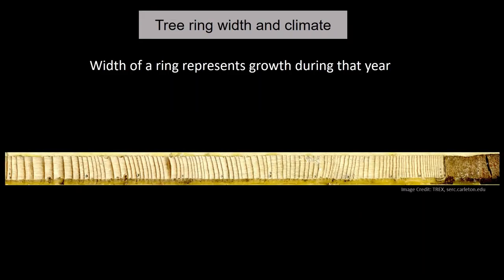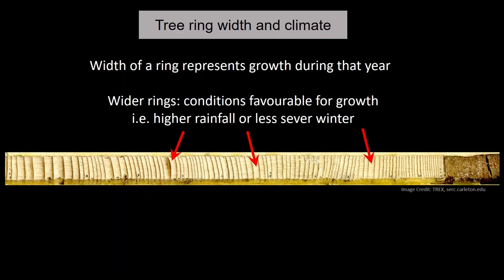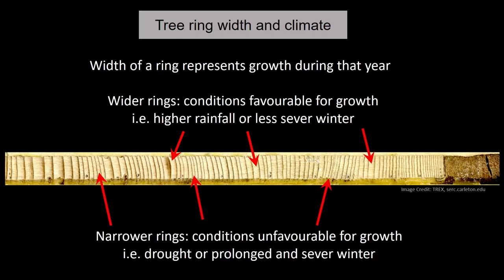Let us see how climate information is preserved in tree ring width. The width of a ring represents growth during that particular year. Wider rings represent conditions favorable for tree growth — those conditions could be higher rainfall or a less severe winter. On the contrary, narrower rings represent unfavorable conditions, such as drought or prolonged severe winter. So ring width is a proxy for either rainfall or temperature variability.